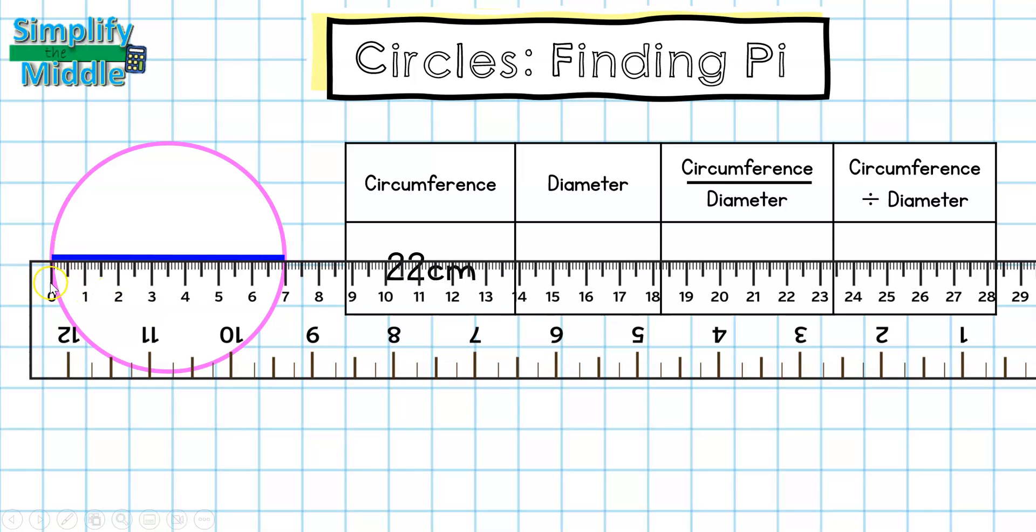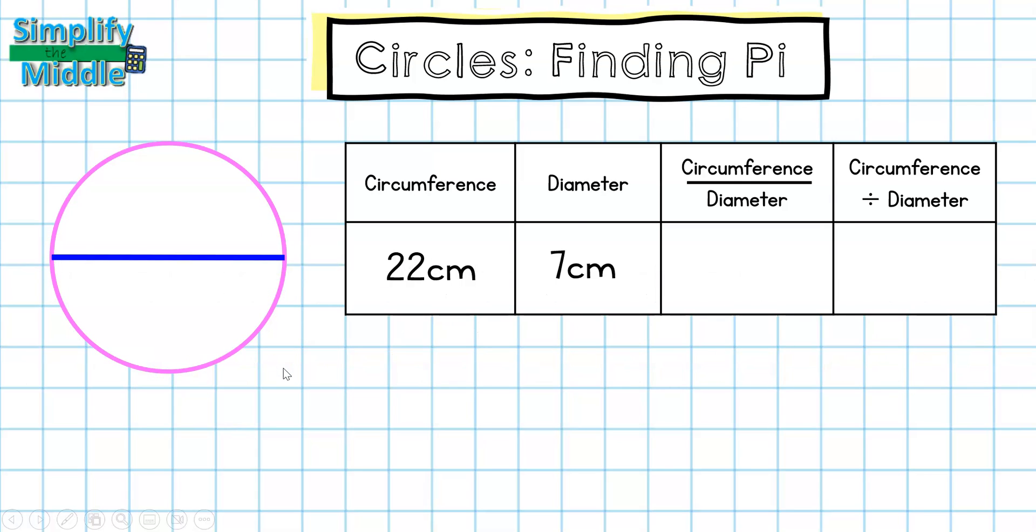Here again I want to make sure that this 0 is aligned with the edge of my line, and on this end I noticed that it stops at 7 centimeters, so I'm going to add that to my table.